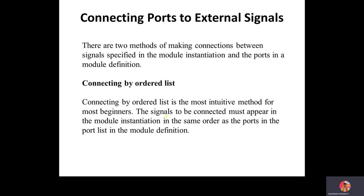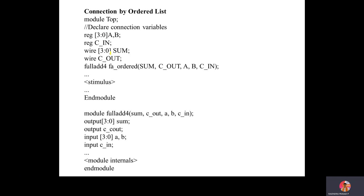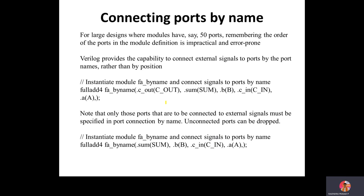When connecting ports to external signals, variables must be mapped to the external signal to get the output. There are two methods of connecting ports to external signals. The first is the ordered list method, which is the most intuitive. Signals must appear in the module instantiation in the same order as the ports in the port list in the module definition. For example, 'module_top' with A, B, C_in, Sum, C_out in order — you will not miss any variables. This is the advantage of the ordered list.